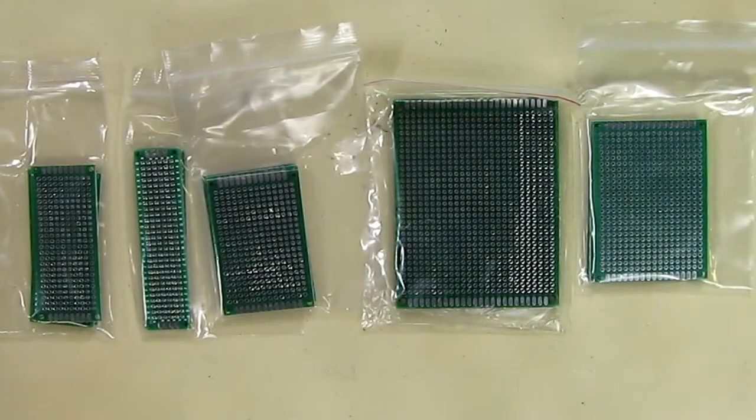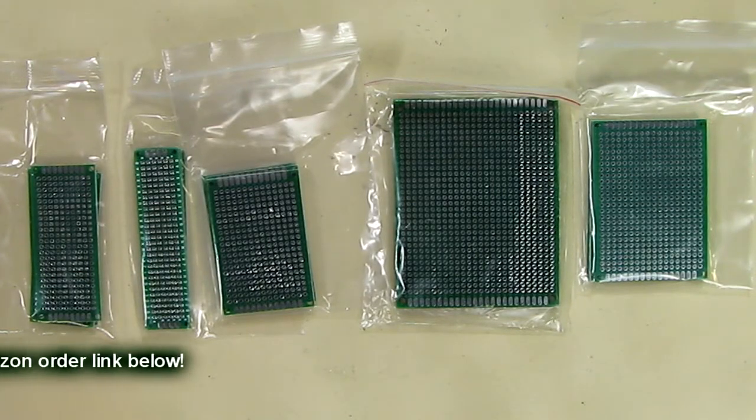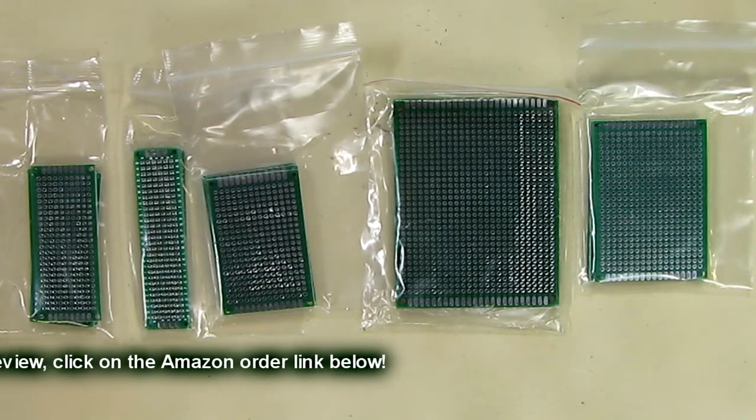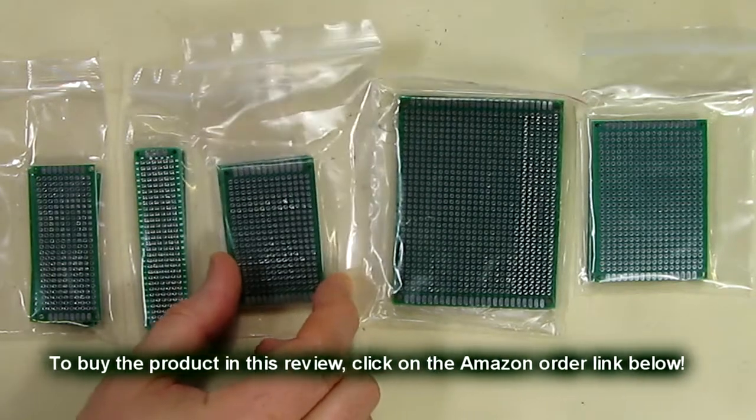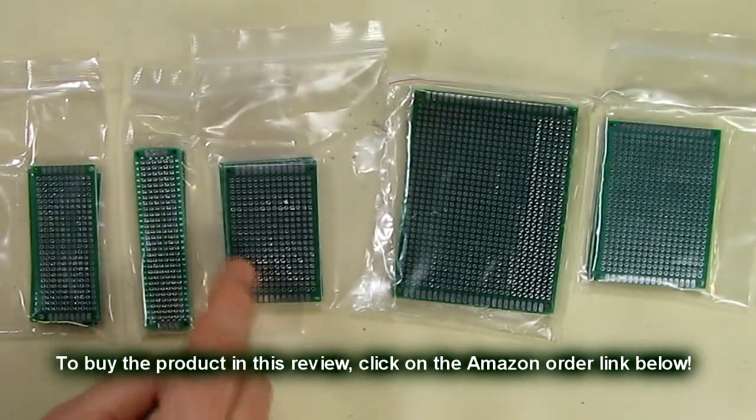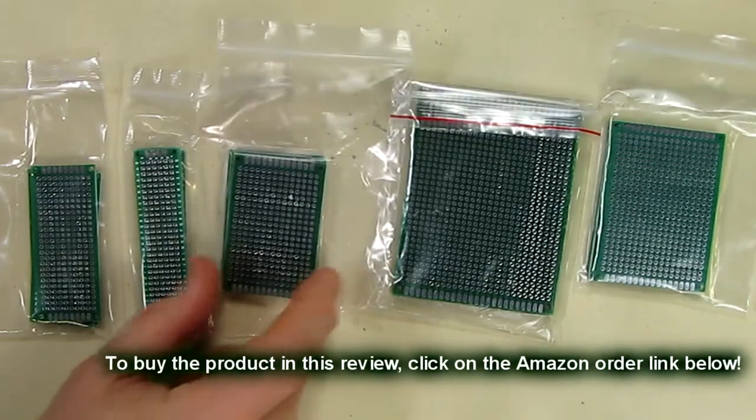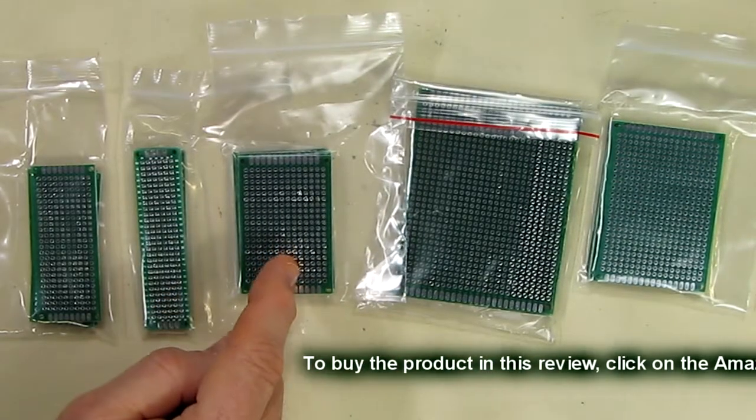So what's my overall opinion about this 20-piece double-sided prototype universal printed circuit board for do-it-yourself applications. As I showed this is very good quality. The thickness, the plating on there of the solder makes it very easy to solder components.